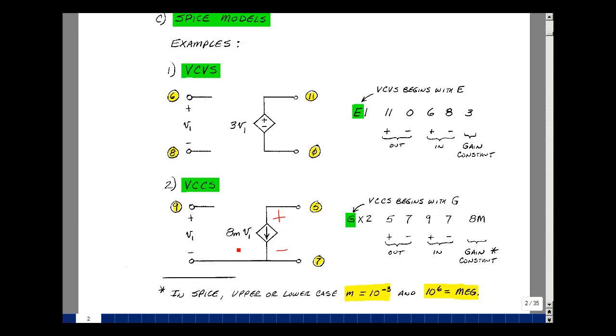The controlling variable is between nine and seven. These don't have to be four distinct terminals. They can be interconnected. Those are the next two terminals. And then the scale factor. This is eight millimhos would be the units on it.